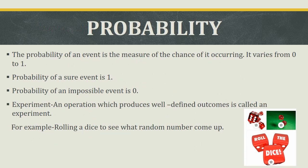The probability of an event is the measure of the chance of it occurring. It varies from 0 to 1. Probability of a sure event is 1 and an impossible event is 0. For example, when a coin is tossed, the possible outcomes are head or tail. The probability of getting a number 6 from a coin toss is an example of an impossible event.